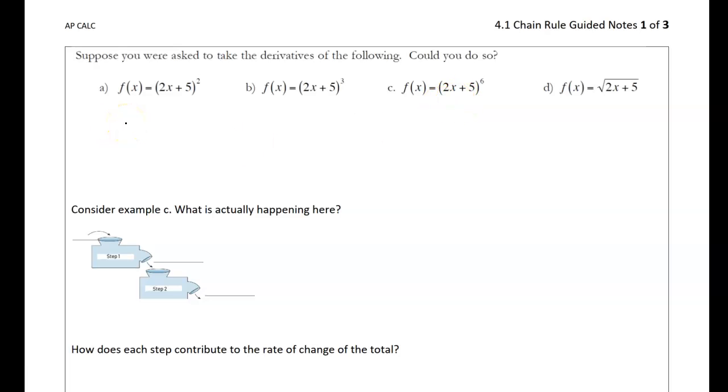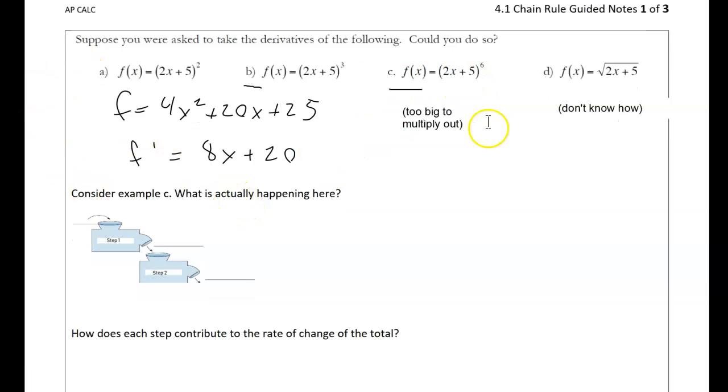By hand with what we know already. For example, a would be like, okay, that's the same as this. I would multiply it out, then I could take my derivative. I could also do the same for b and c, although c would suck—I wouldn't want to multiply it by itself six times. And d, we don't know how to multiply this out. Notice the pattern: they're all versions of this function 2x plus 5 stuck inside of another function.